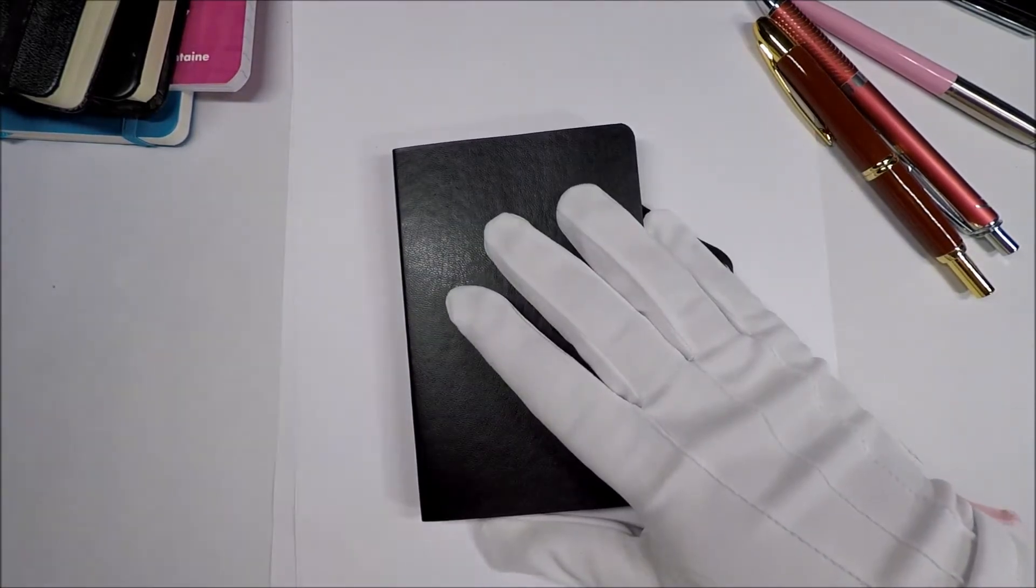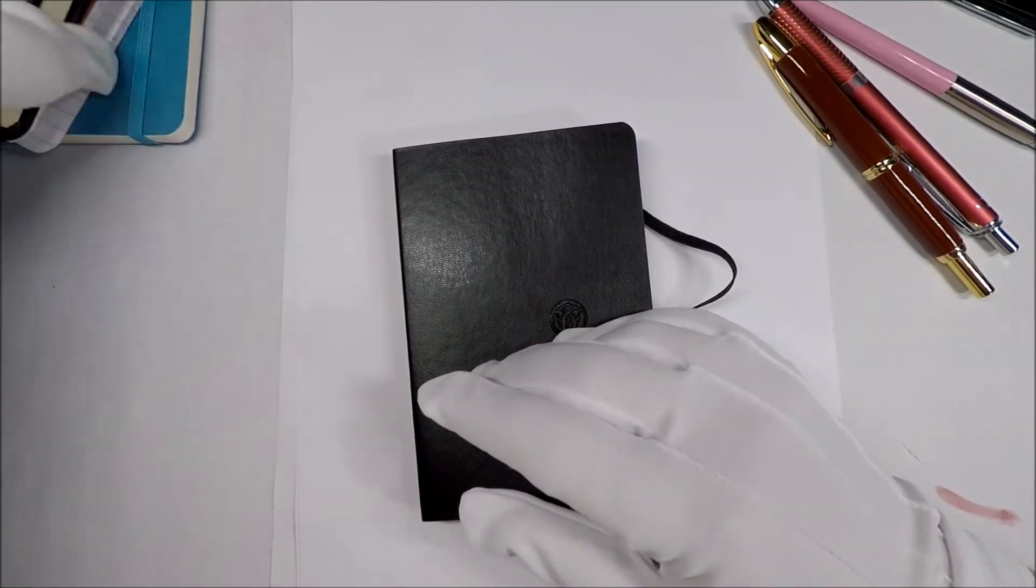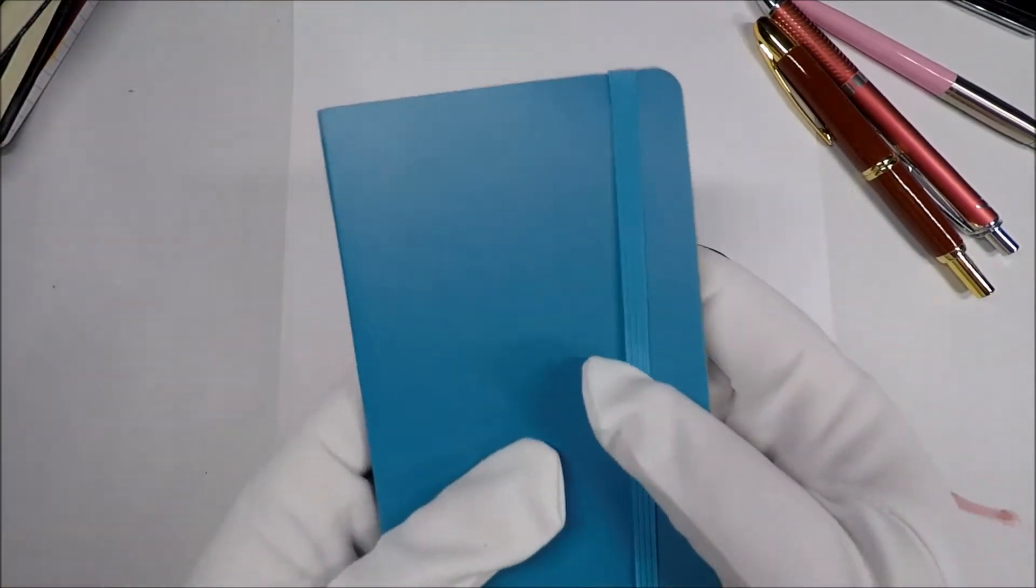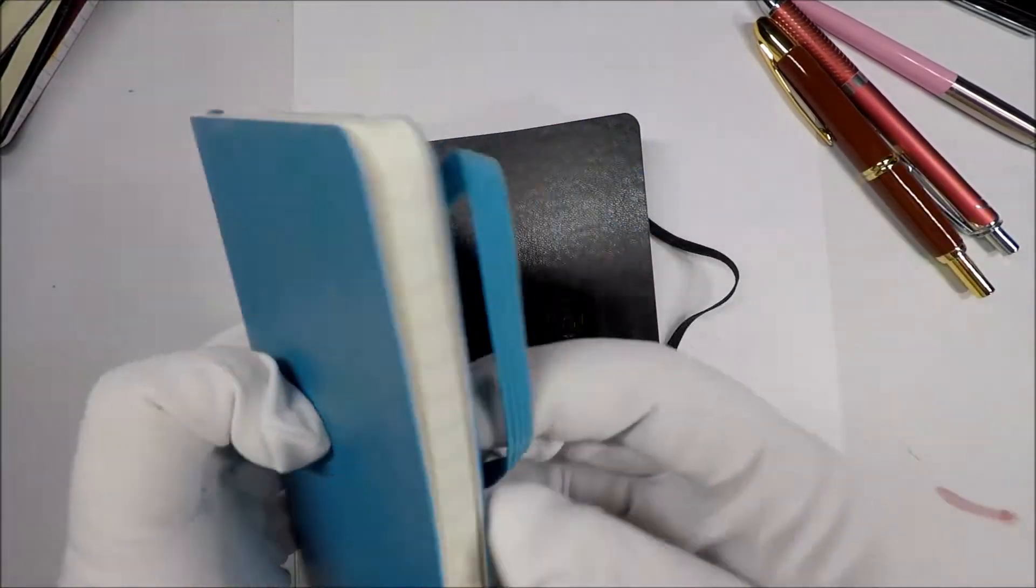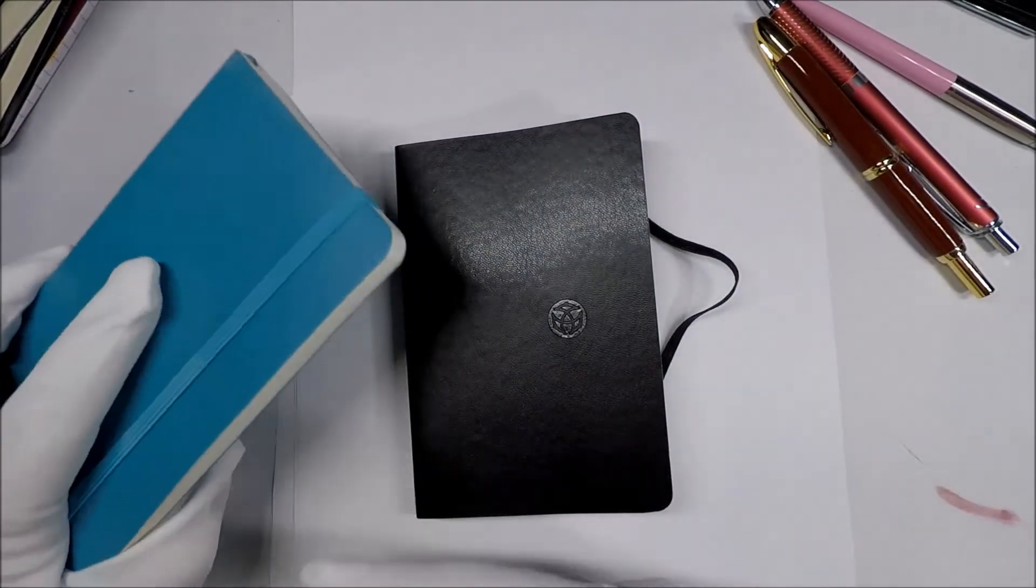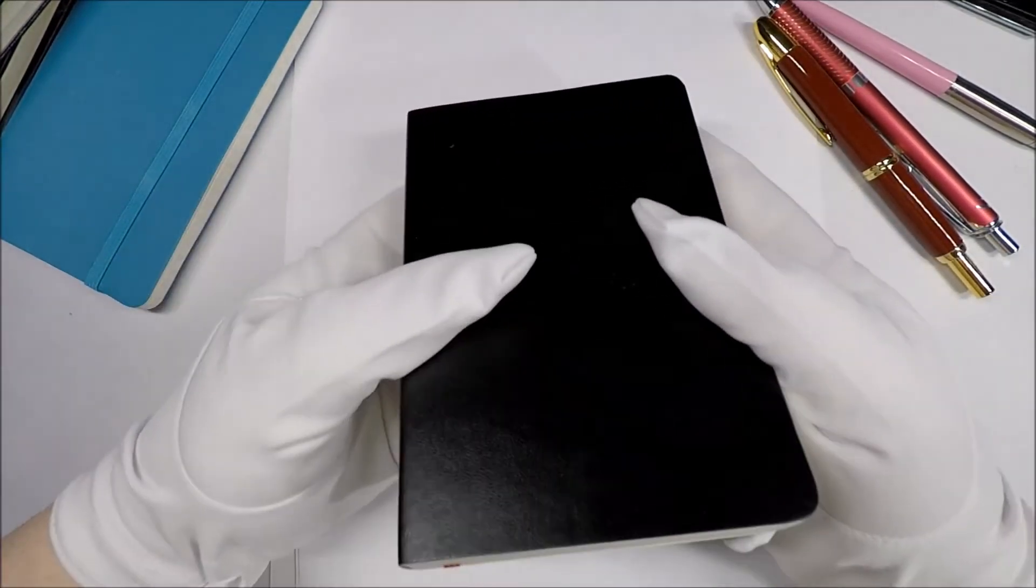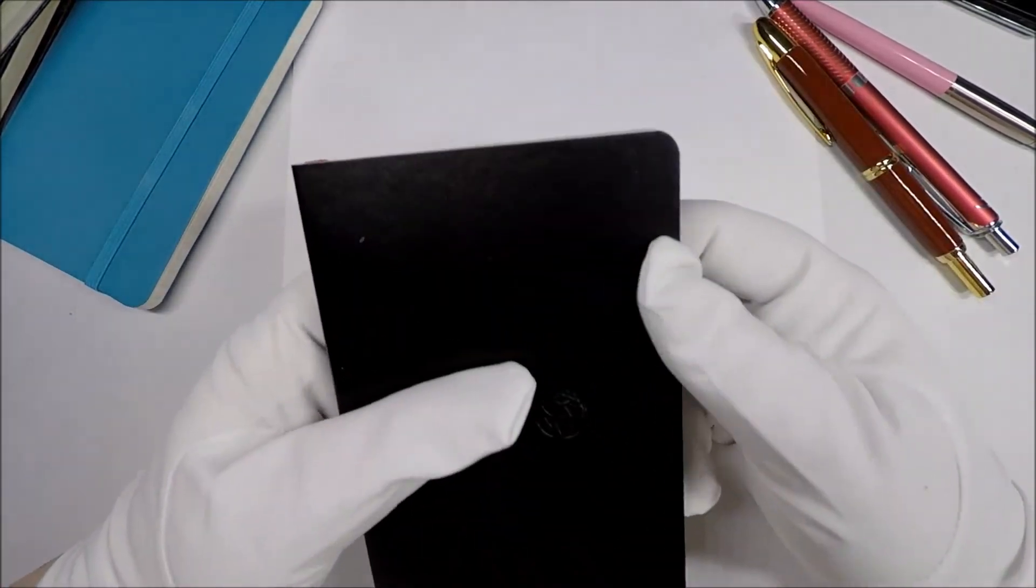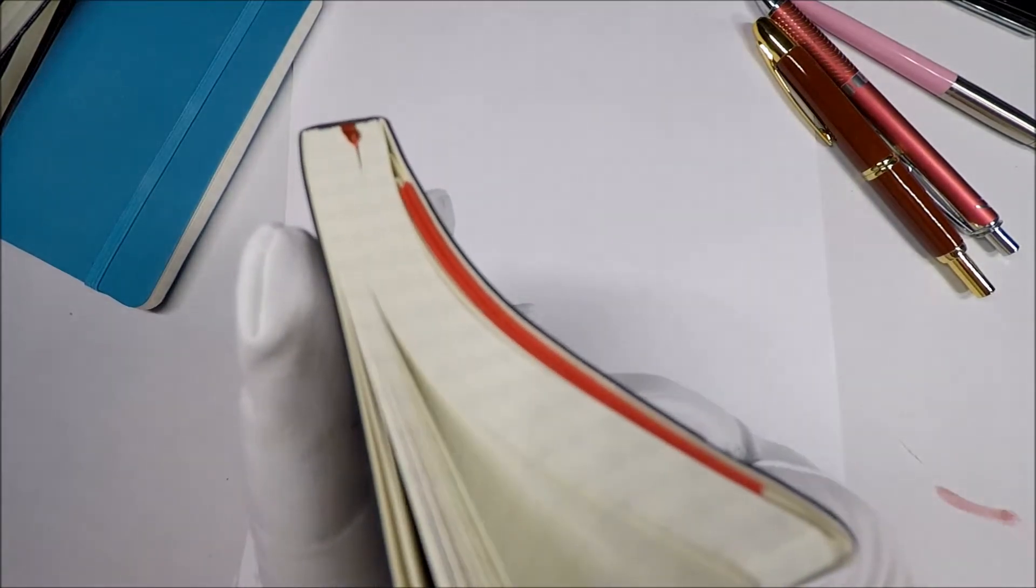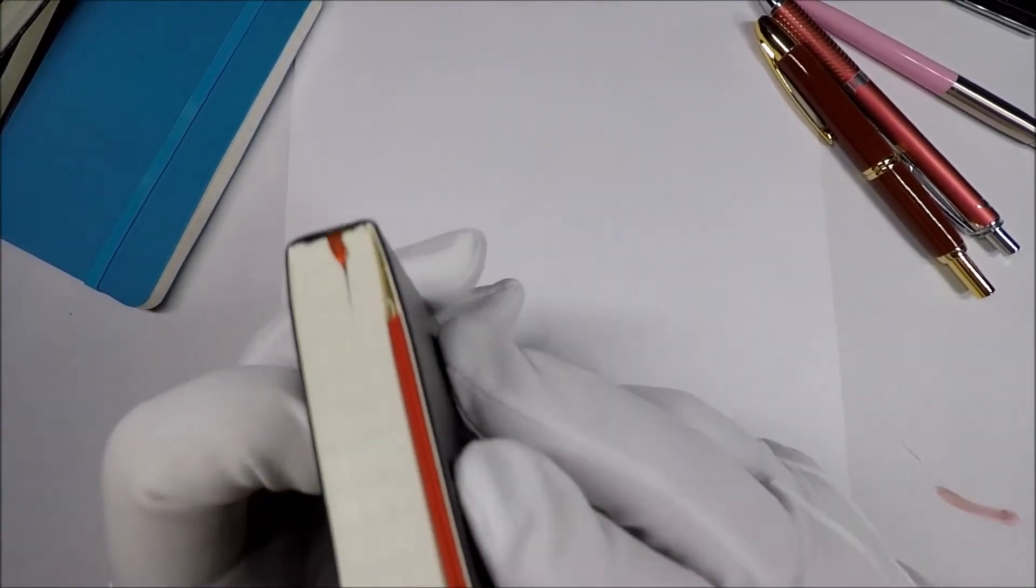So, unlike the Moleskine, it doesn't have any perforated pages, and the Leuchtturm 1917, it just has a couple of perforated pages in the back. This one has all the pages perforated, which is actually kind of good. I like that aspect of it. My only concern would be that they hold up and survive, not come apart. So the big point is, how is it to write in it? And it seems like it loosens up pretty good after you basically break it in a little bit.